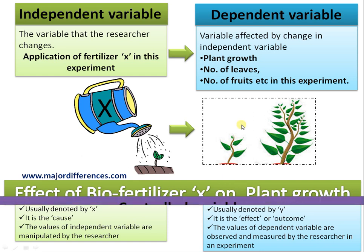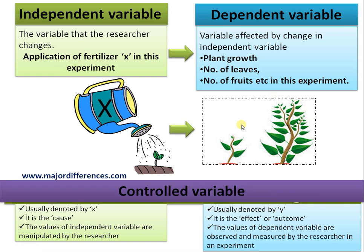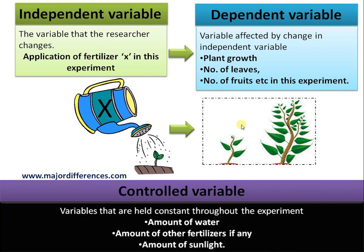The third type of variable is the controlled variable. There are many other parameters in this experiment, like the amount of water, the amount of fertilizers, and the amount of sunlight. All these should be held constant in an experiment. All variables that are held constant throughout the experiment are called controlled variables.